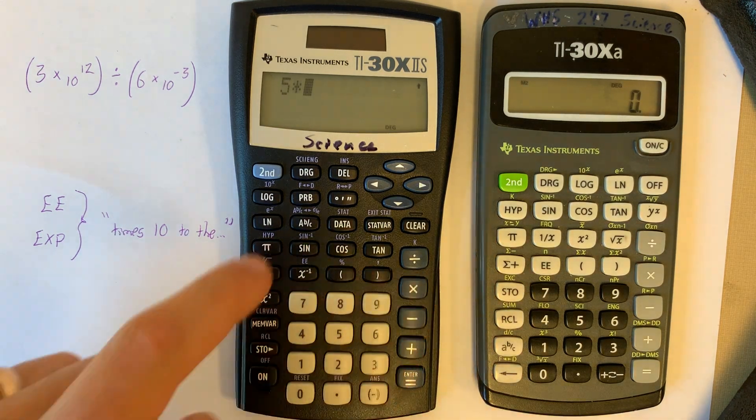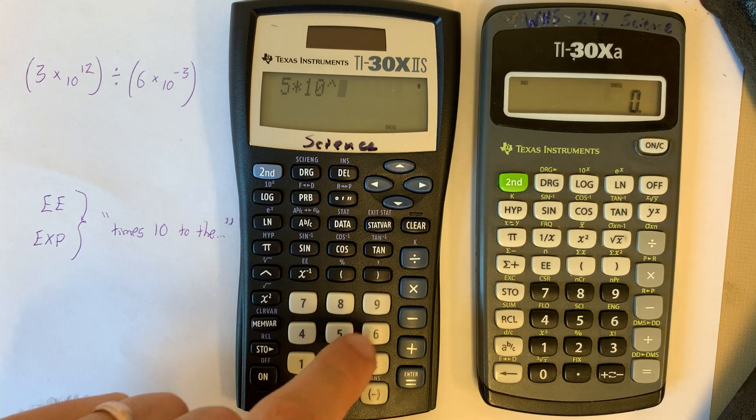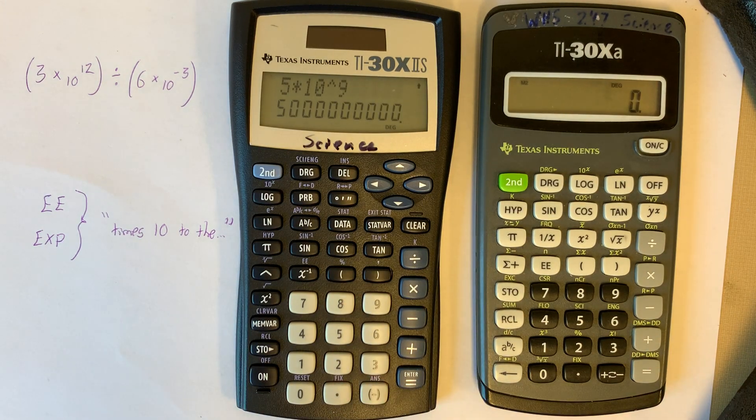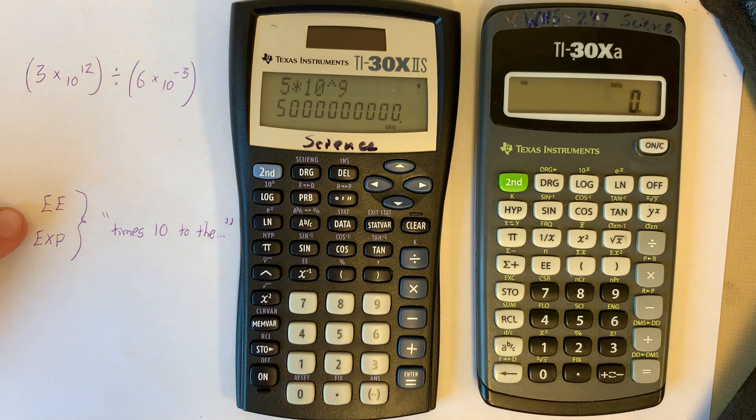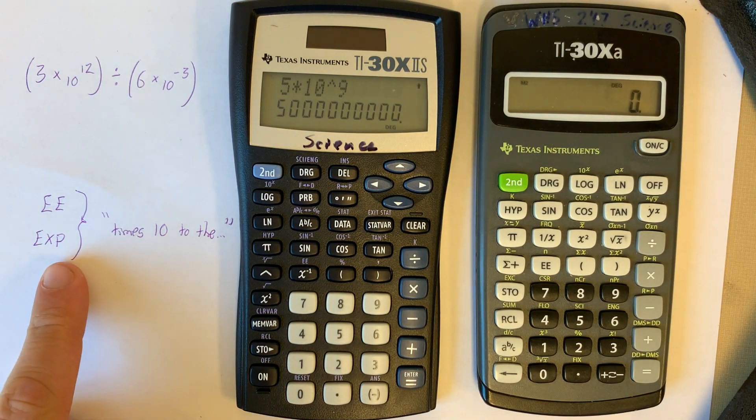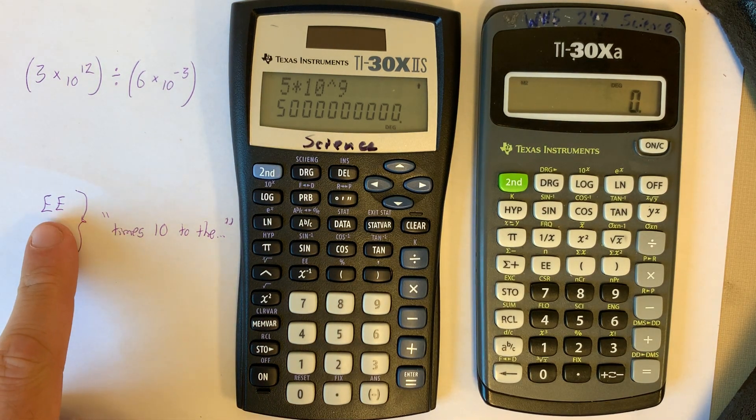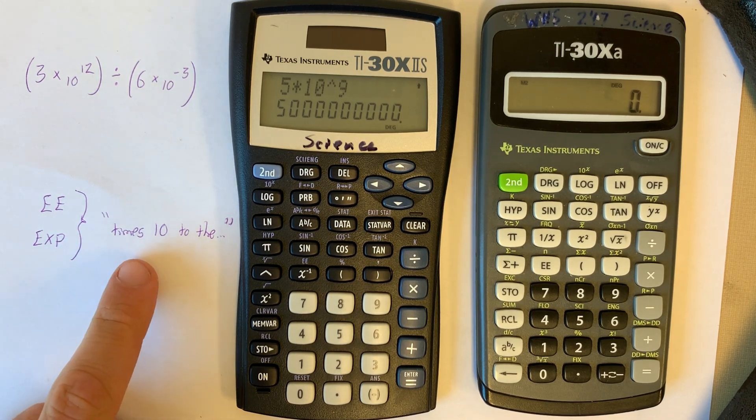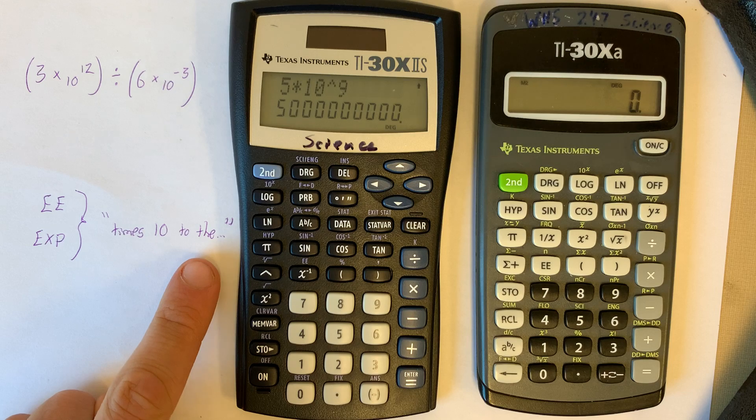You could type 5 times 10 to the 9th, right, and you can get an answer that way, but I strongly recommend using one of these two buttons. Some calculators have an EE button, other calculators it says EXP, and that means times 10 to the.